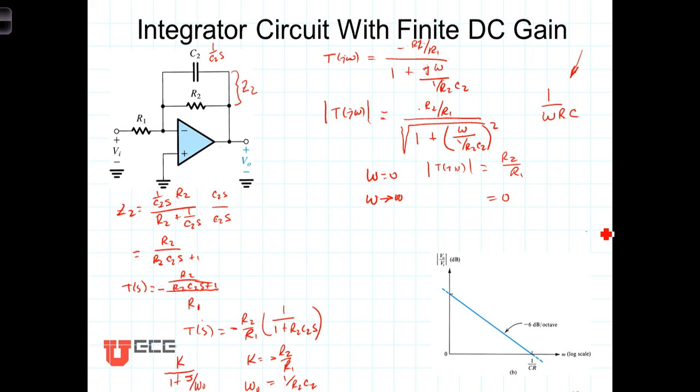Now let's take a look at the Bode plot for these. What this is saying is that we've got a cutoff frequency in this circuit, not at 0, but at the frequency 1 over R2 times C2. So the time constant associated with this parallel combination becomes 1 over the cutoff frequency.